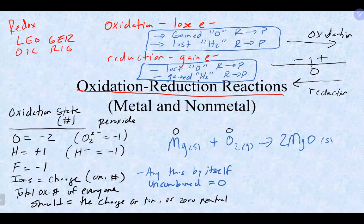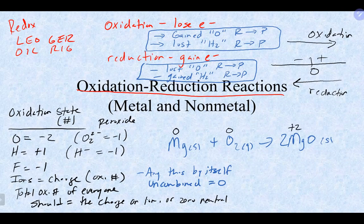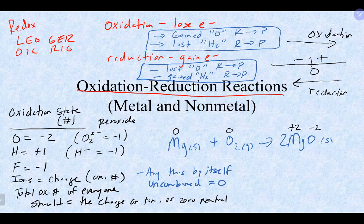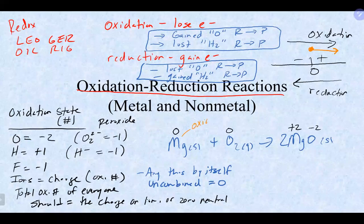Using the number line: magnesium starts at zero and ends at +2, moving in the positive direction — the magnesium is being oxidized. The oxygen starts at zero and ends at -2, moving in the negative direction — it is going through reduction. This is always what should happen in an ionic compound: metals lose electrons and are oxidized; non-metals gain electrons and are reduced.